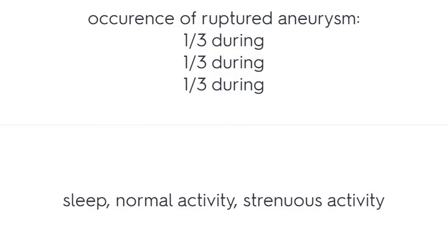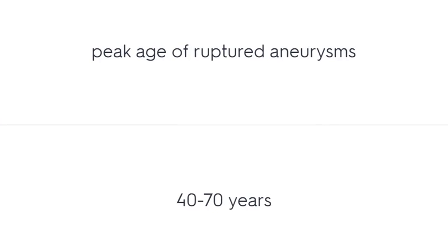Occurrence of ruptured aneurysm: one-third occur during sleep, one-third during normal activity, and one-third during strenuous activity. Peak age of ruptured aneurysms is 40 to 70 years.